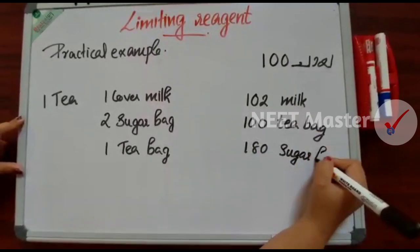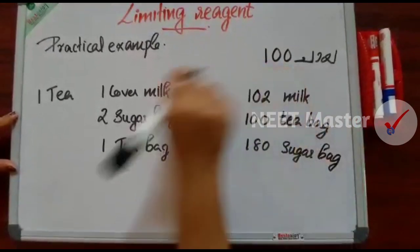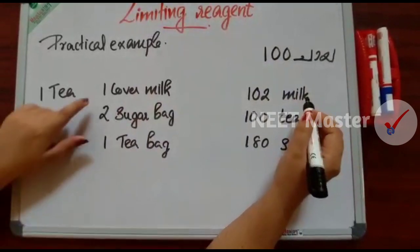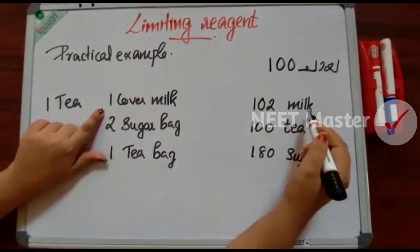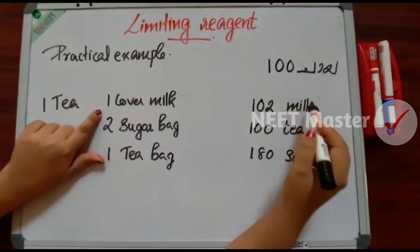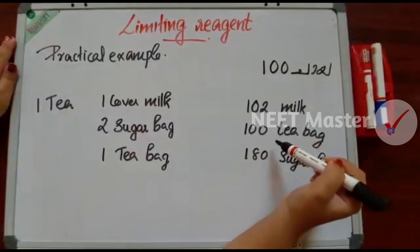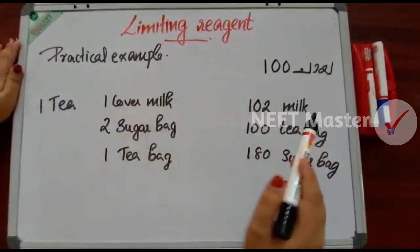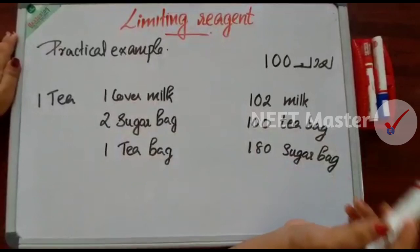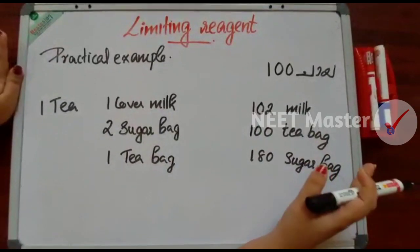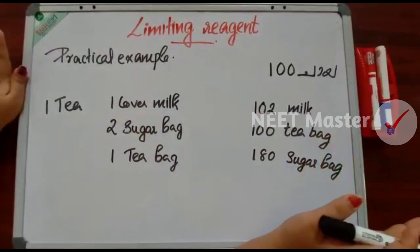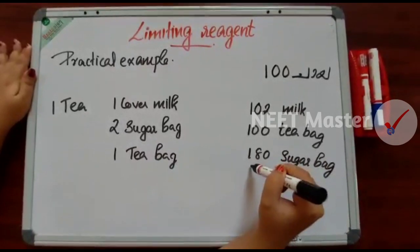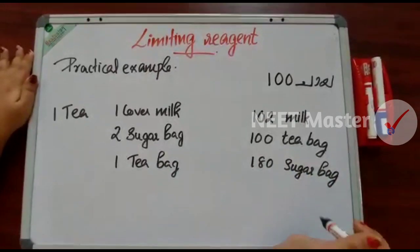Let's try this. If you need to make the milk, we will use all these. We have to give 1,000 milk, and then we will make 100 milk. We will add 100 tea bags — one tea bag — and then we will have to make 100 tea bags. If you have a 100 tea bag, it will make 100 tea bags. If you have a sugar bag, you will need to make 180 sugar bags.